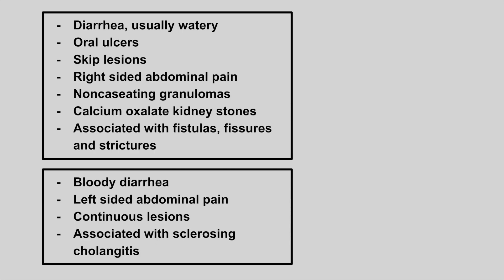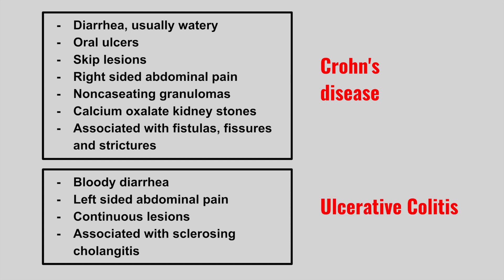The next patient has watery diarrhea, oral ulcers, skip lesions, right-sided abdominal pain, non-caseating granulomas, calcium oxalate kidney stones, and fistulas, fissures, and strictures — this is Crohn's disease. This is often compared to the next patient who has bloody diarrhea, left-sided abdominal pain, continuous lesions, and is associated with sclerosing cholangitis — that's ulcerative colitis. These two conditions are both inflammatory bowel diseases and are highly tested together.